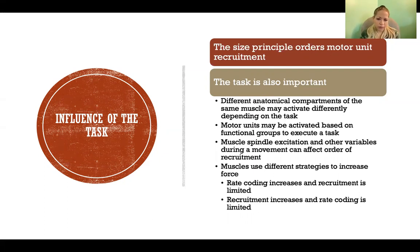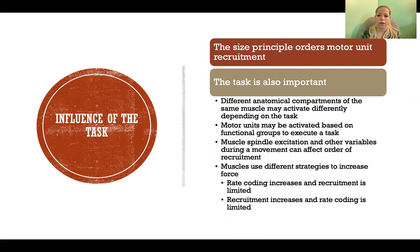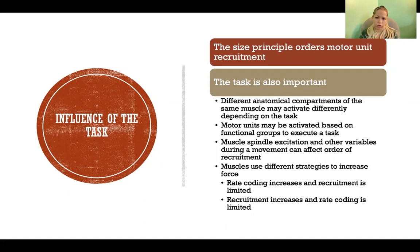Muscle spindle excitation can also affect the order of recruitment, and that would be a central programming difference. The way we plan the task in the cerebral cortex — we would plan the muscle activations differently if it's an action where we have an excessive amount of muscle spindle excitation, like when the muscle is lengthening during contraction.